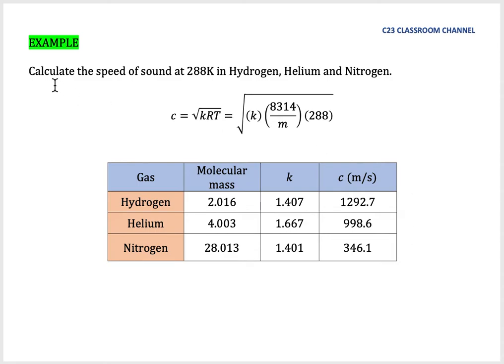For example, we have a simple calculation. Calculate the speed of sound at 288 Kelvin in hydrogen, helium, and nitrogen.